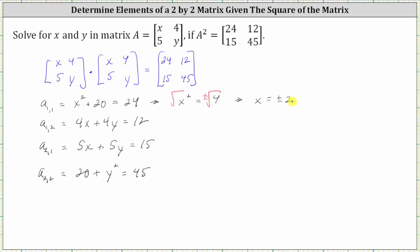And then for the fourth equation, we subtract 20 on both sides. 45 minus 20 is 25, which gives us y squared is equal to 25. To solve for y, we take the square root of both sides of the equation. And again, we are going to have two solutions. Here we have y equals plus or minus five.